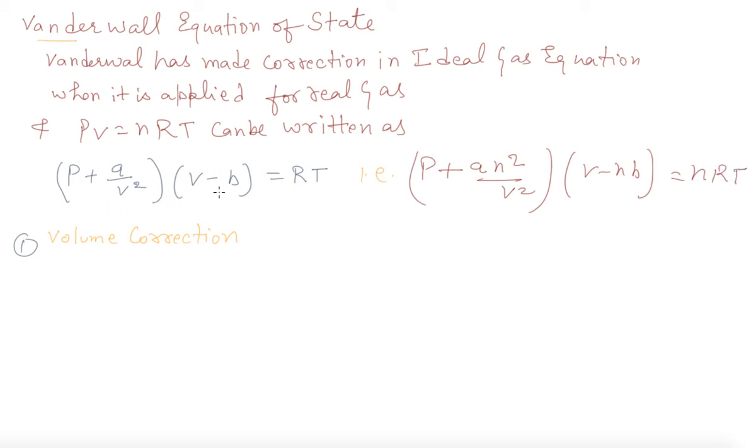Number one is for volume correction. Actually when ideal gas, the volume of ideal gas can be taken as a container, volume of container whole. But whenever we are approaching it in the real gas, then real gas can be compressed and it will get less volume.